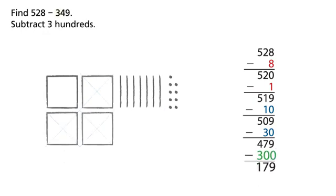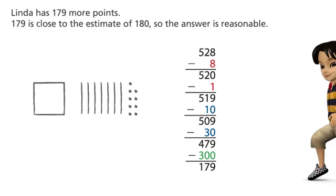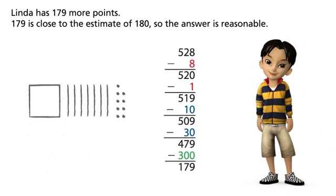Subtract 3 hundreds. Linda has 179 more points. 179 is close to the estimate of 180, so the answer is reasonable.